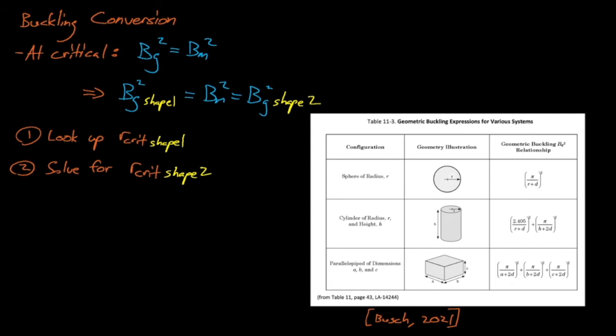Nonetheless, if you're caught in an emergency situation where, for example, you need to quickly move liquid from one container into another container, then this buckling conversion method can quickly convert critical dimensions from one shape into another shape, albeit approximately.